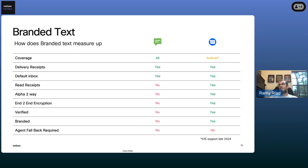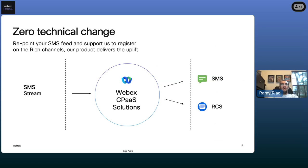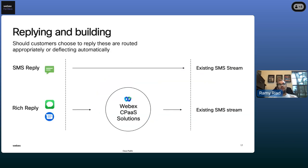The way we like to talk about this is that it's a zero technical change. If you're an existing customer using WebEx Connect for your SMS traffic, all you need to do is call your account manager and say you want to upgrade to Branded Text. We handle everything — we uplift your SMS program within the CPaaS platform and choose whether to deliver as SMS or RCS based on device capabilities. Replies come back into your existing SMS stream, so existing flows and backend integrations don't change.